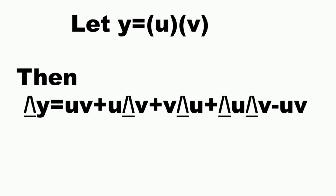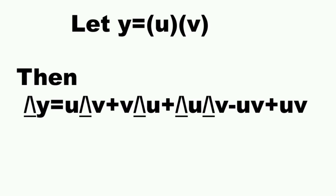Here we have minus uv plus uv, which cancel to zero, so delta y is equal to u delta v, plus v delta u, plus delta u times delta v.